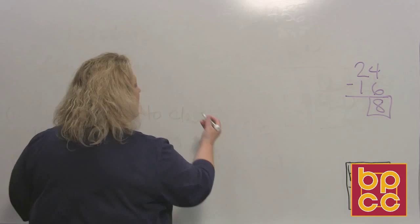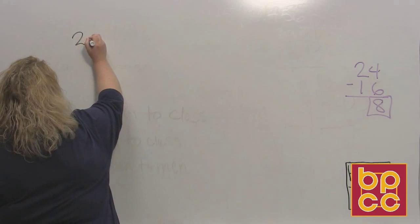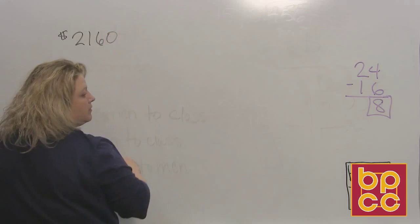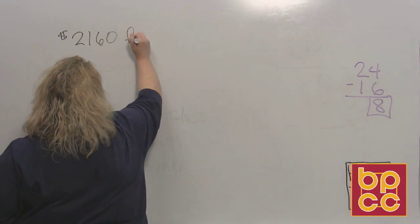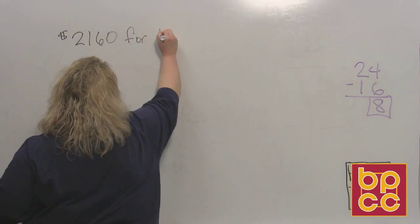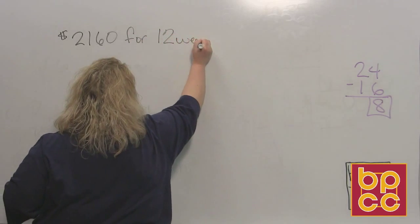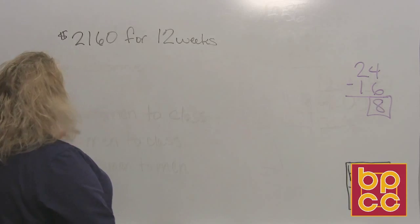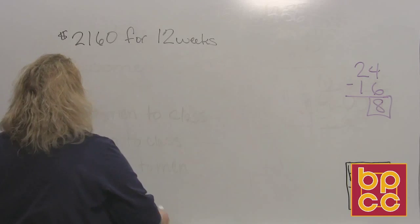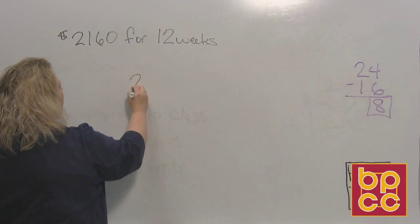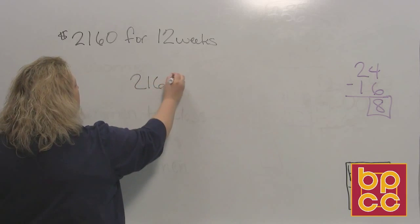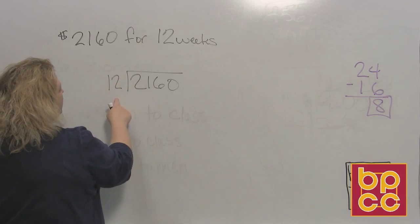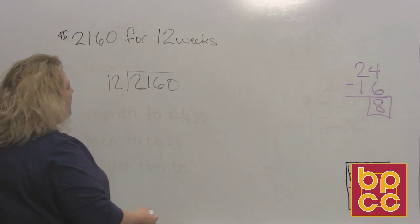Okay, so it says $2,160 for 12 weeks. And I want to know how much I earned in one week. So what do we have to do? We have to do division. So that would be $2,160. That's your dividend. 12 is your divisor. And now we're going to divide.